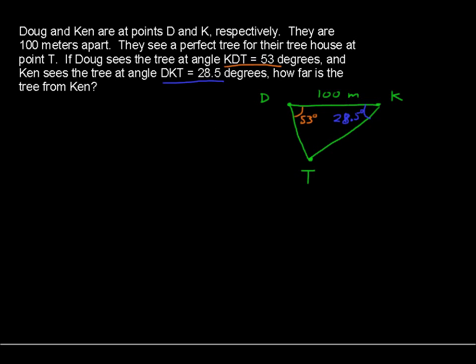We want to find, ultimately, this length. How far is Ken from the tree? That's what we're looking for. We're going to use the law of sines. And that law of sines says that the sine of an angle divided by the opposite side is equal to the sine of another angle divided by its opposite side length.